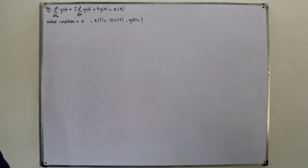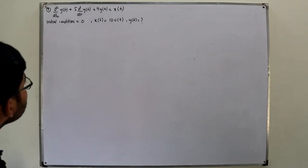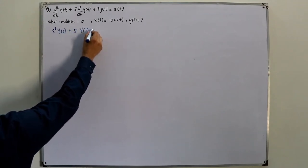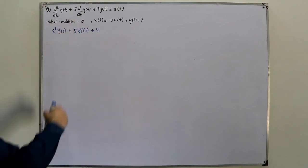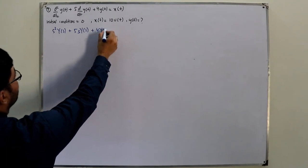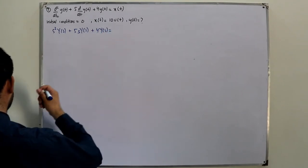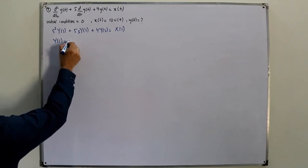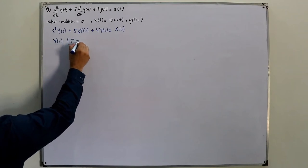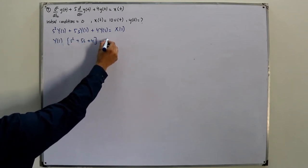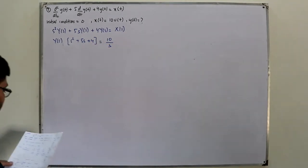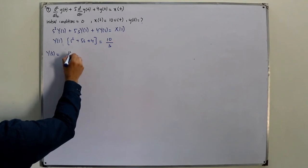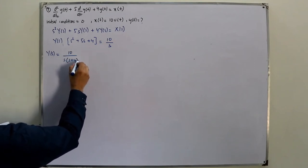Taking the Laplace transform: s²Y(s) + 5sY(s) + 4Y(s) = X(s). Taking Y(s) common: Y(s)(s²+5s+4) = X(s) = 10/s. So Y(s) = 10/[s(s+4)(s+1)], after factoring the denominator.